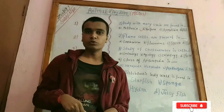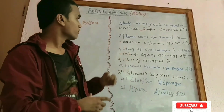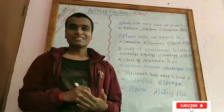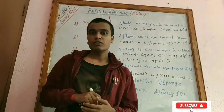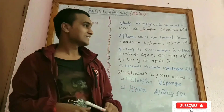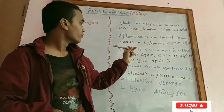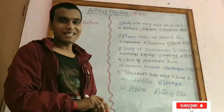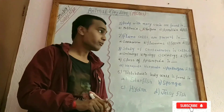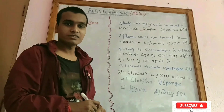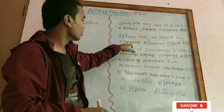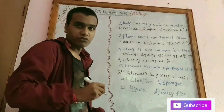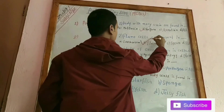In question number 2, flame cells are present in which organism? Flame cells are present in Platyhelminthes. Organisms like Earthworm belong to Annelida, while flatworms belong to Platyhelminthes. Therefore the answer is option B — Platyhelminthes.